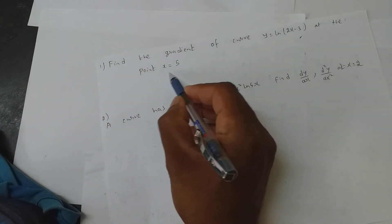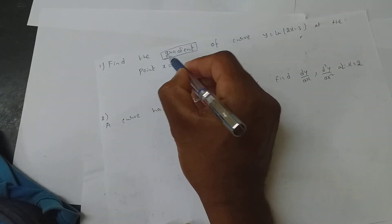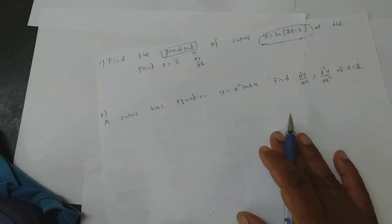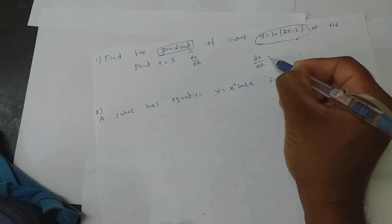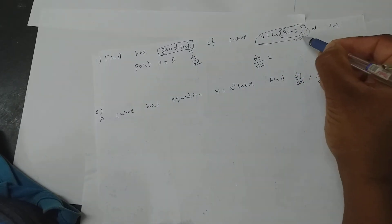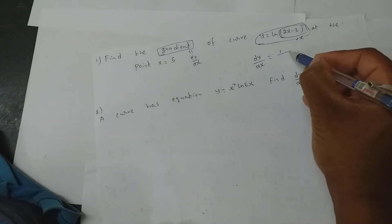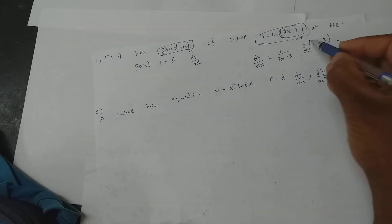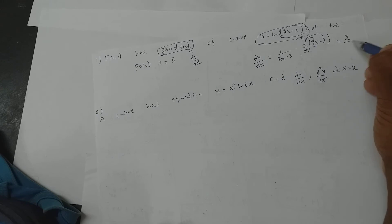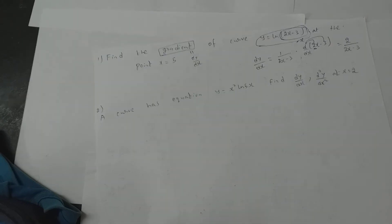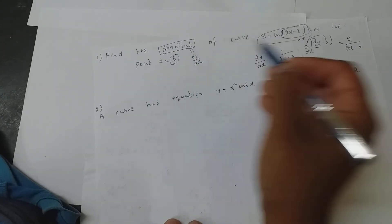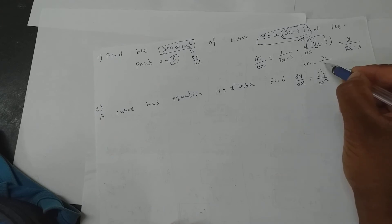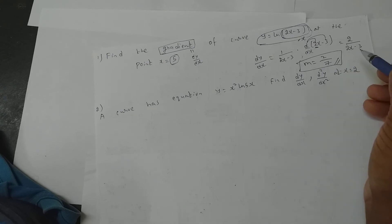Let us look at one more problem. Find the gradient of the curve at the point x equals 5. Gradient means dy by dx. So differentiate the expression — assuming the entire argument to be x, dy by dx equals 1 by (2x minus 3) into 2, which gives 2 by (2x minus 3). Now replace x with 5: 2 by (10 minus 3) equals 2 by 7. That is the gradient.